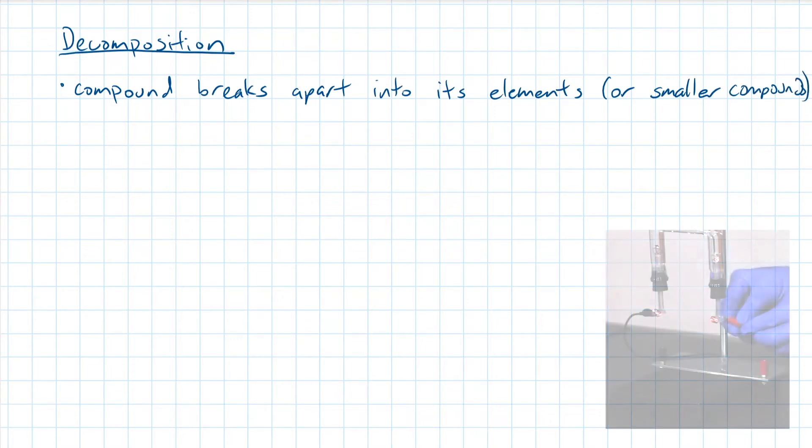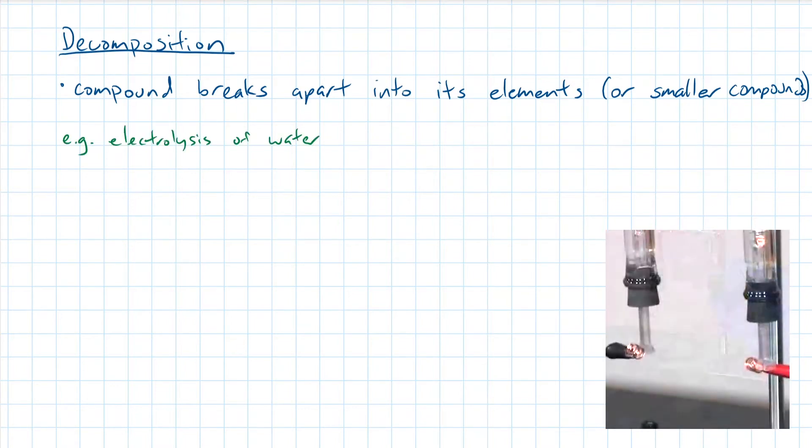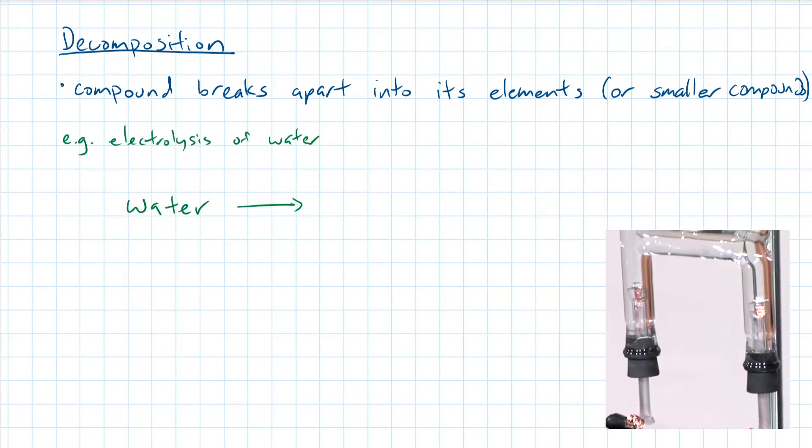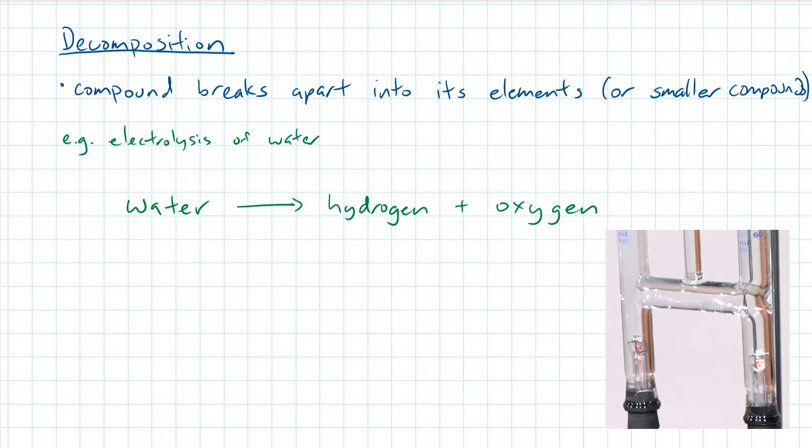The second type of reaction is decomposition. This is the opposite of synthesis, where a compound breaks apart into its elements or into smaller compounds. For example, when you pass current through water, the added energy will cause the bonds between the hydrogen and oxygen to break apart.